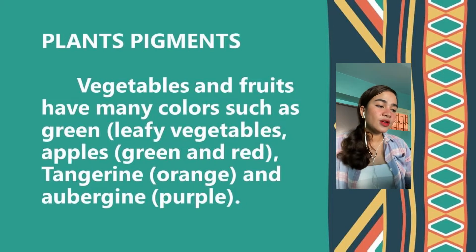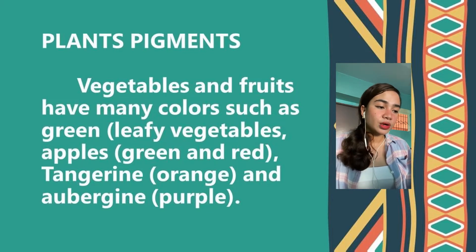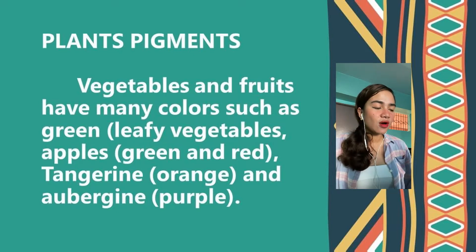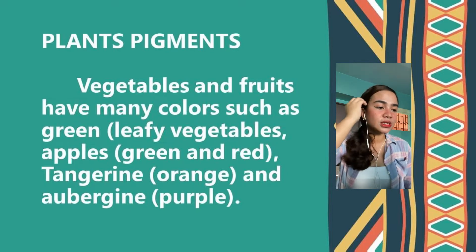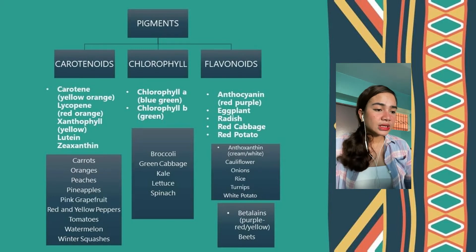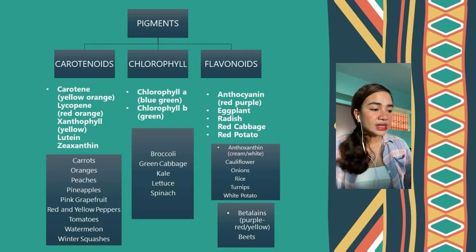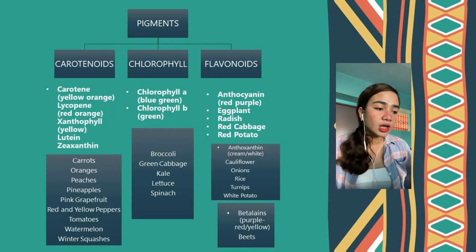Plant pigments. Vegetables and fruits have many colors, such as green leafy vegetables, apples such as green and red, tangerine which is orange, and aubergine which is purple. Plant pigments fall into major groups: we have carotenoids, chlorophyll, and flavonoids. Carotenoids and chlorophyll are found in plastids and are fat soluble, while flavonoid pigments are water soluble and have a tendency to be lost in cooking water.